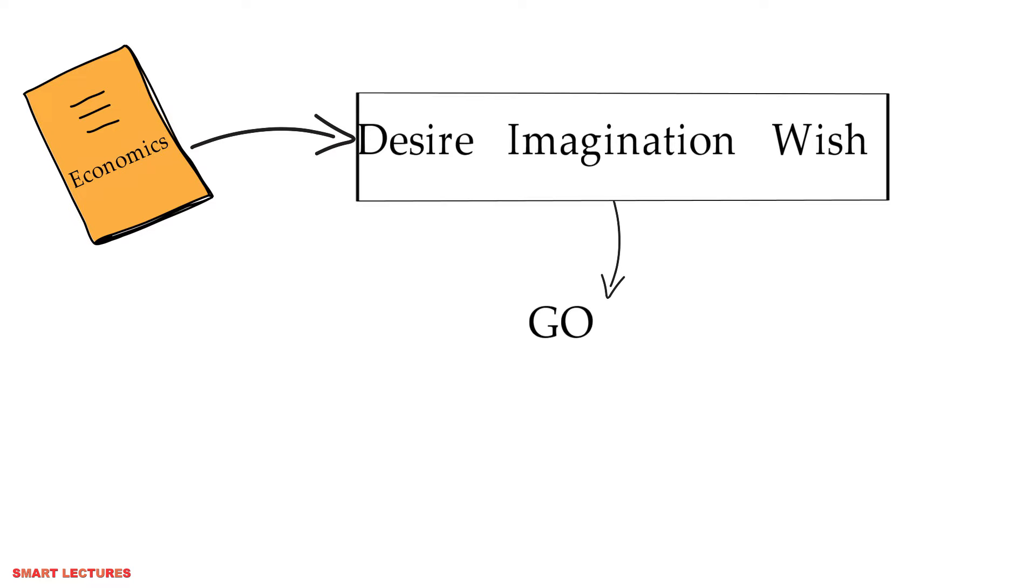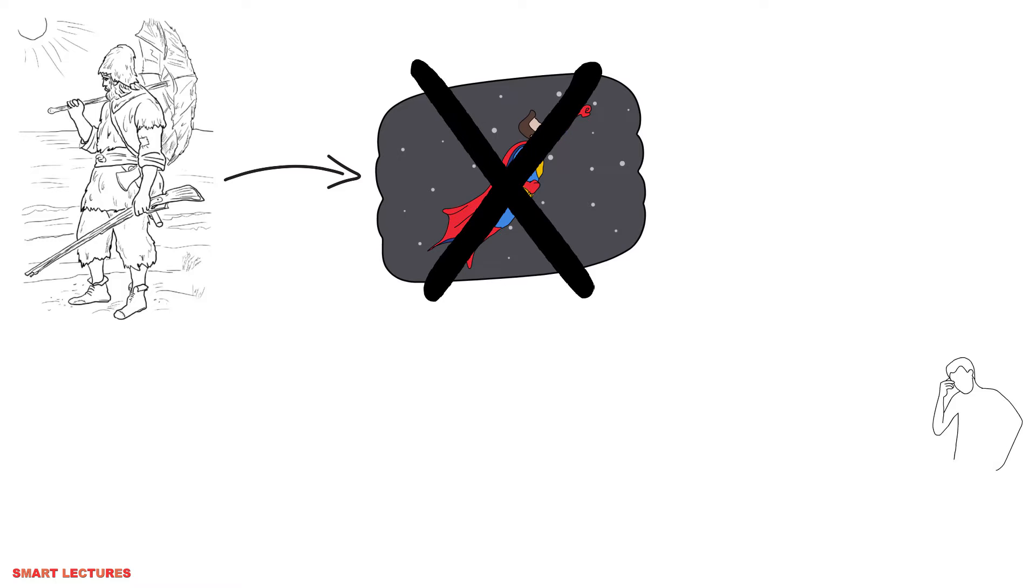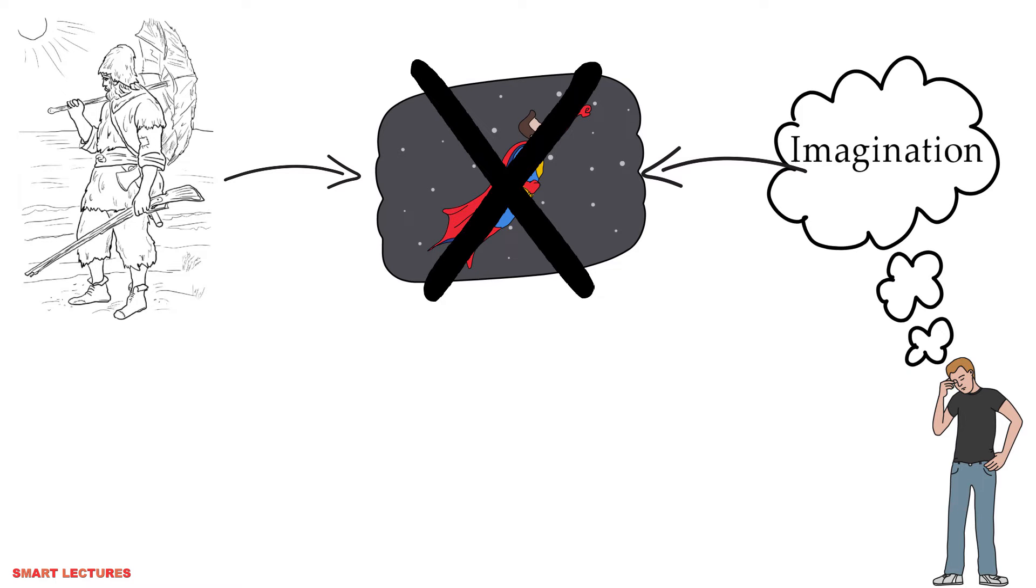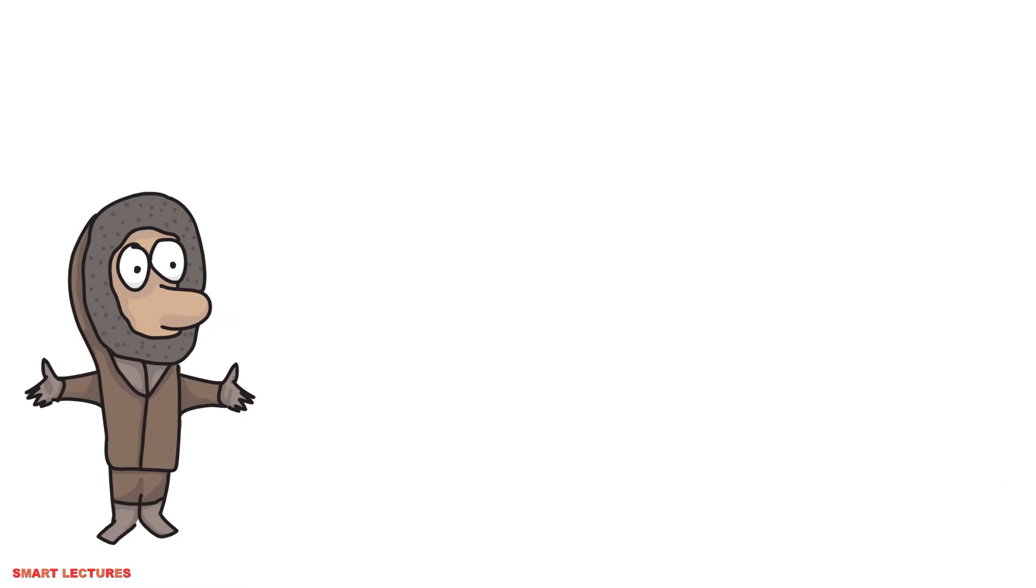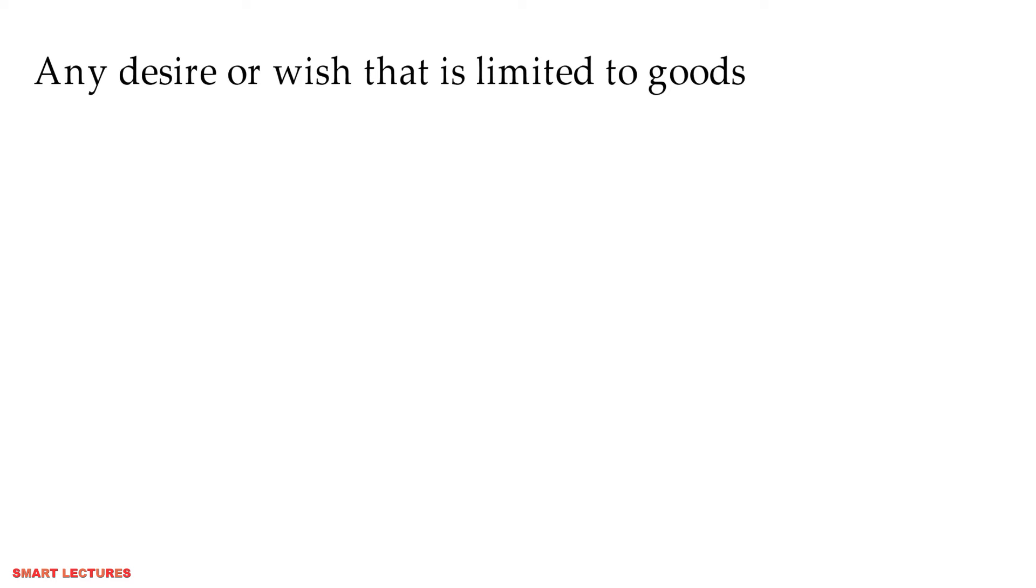But in economics, only those desires or wishes which are related to goods are called want. If Robinson dreams of flying in the sky, that's not want because that's simply imagination. We cannot call it want because it's not related to any good. If somebody desires to enjoy snowfall in summer, you can't call it want. It's simply imagination. Any desire or wish that is related to goods is called want. This is the basic meaning of want in economics.